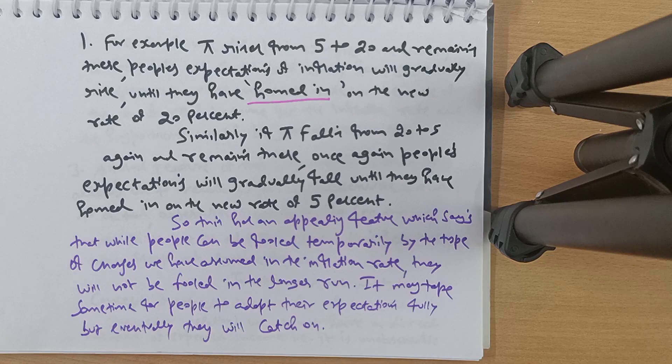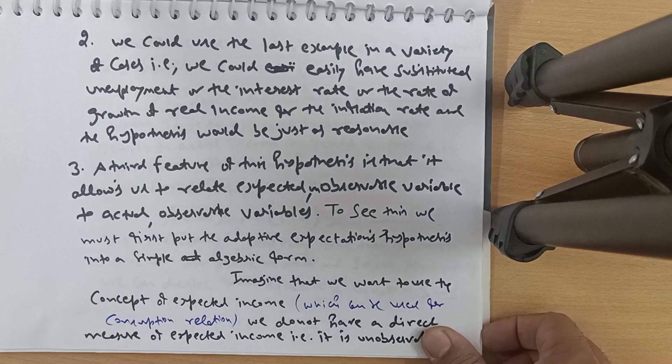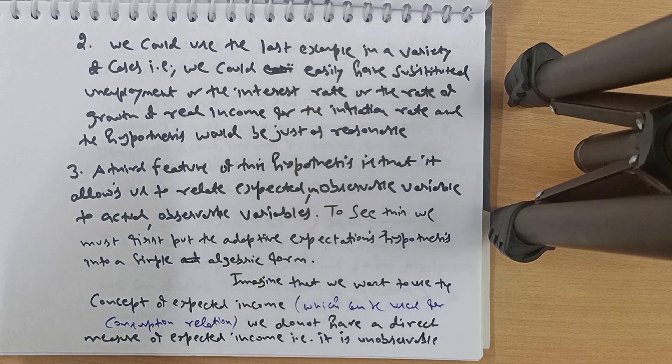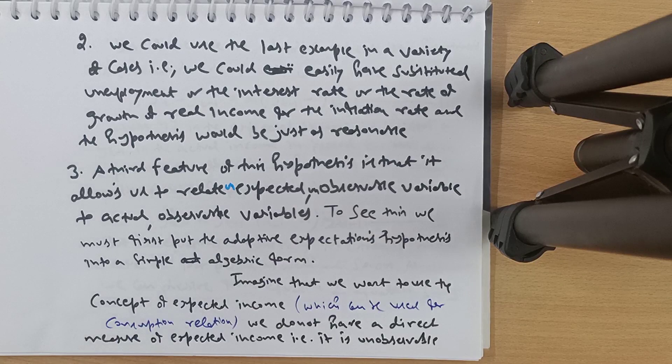Slowly but surely, people will catch on to that particular value. A second feature is we could use the last period's example in a variety of cases. A third feature of this hypothesis is that it allows us to relate expected — that is unobservable — variables to actual observable variables. To see this, we must put the adaptive expectation hypothesis into a simple algebraic form.